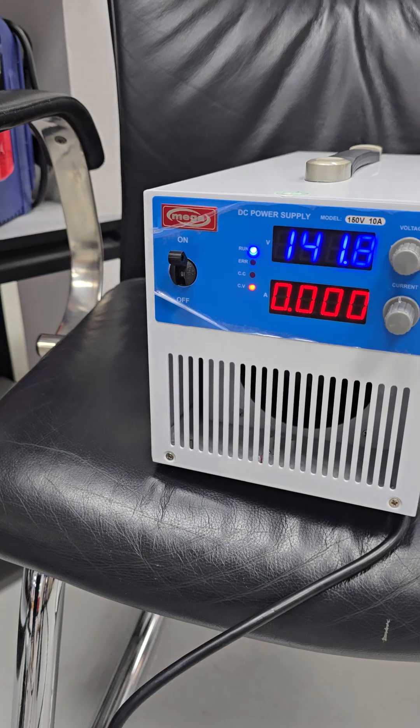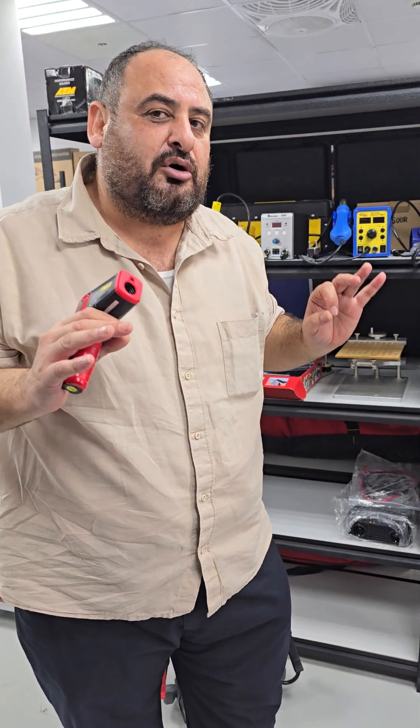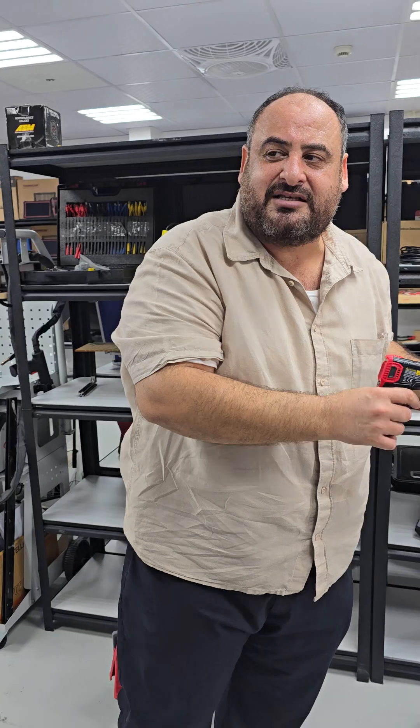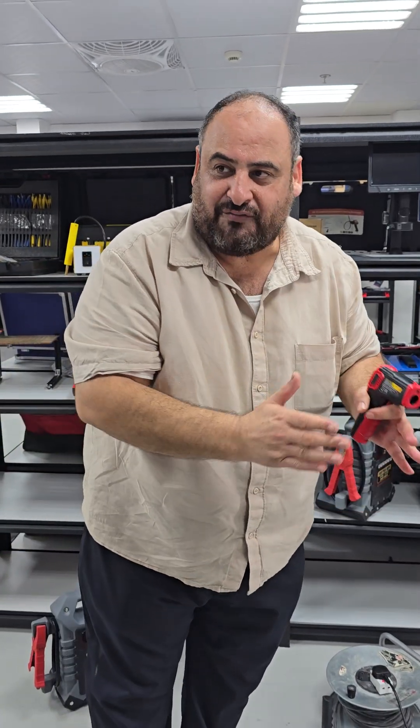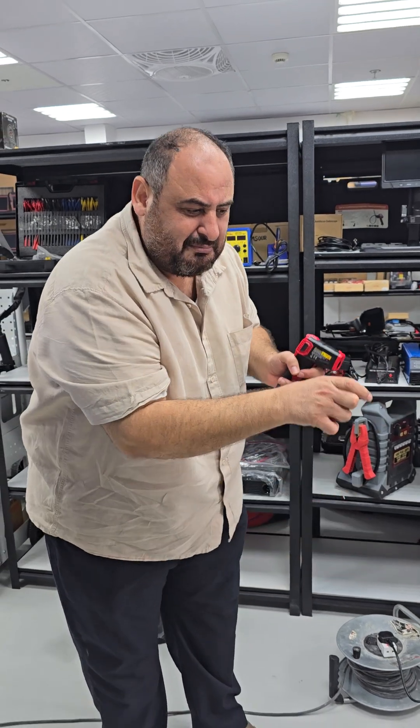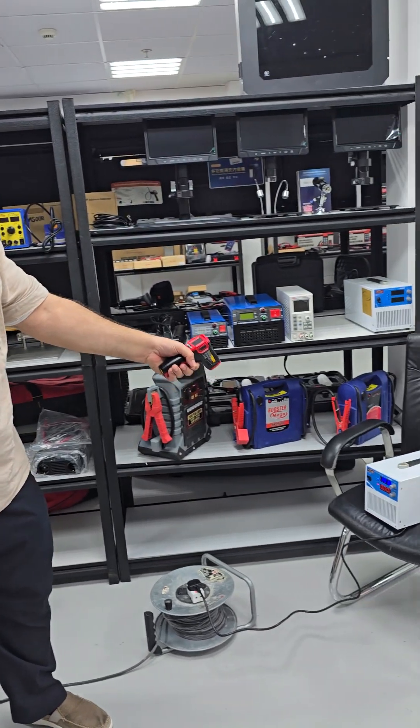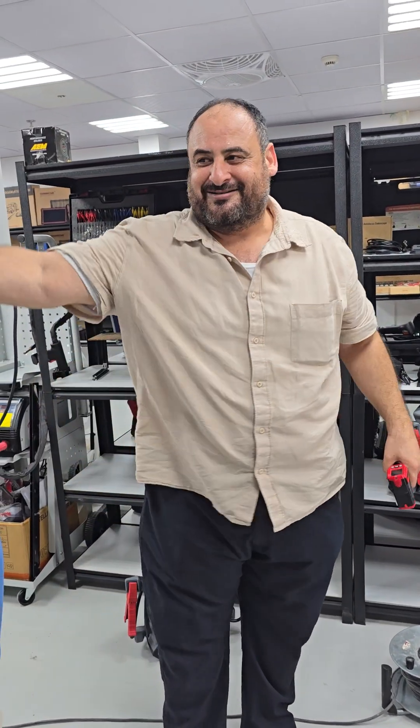Why this device is important? This device is important because without this device you need to dismantle each and every cell of the alkaline battery away from the battery bank and charge them separately. This will cost you time, this will cost you effort. This is saving your time and saving your effort. Thank you very much for watching us.